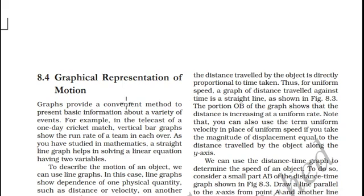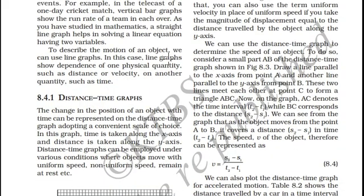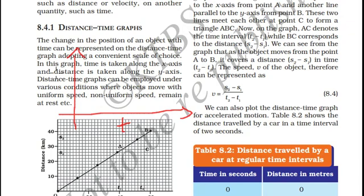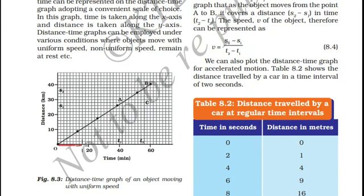Graphical representation of motion: to describe the motion of an object we can also use graphs. In distance-time graphs, we generally plot time on the horizontal axis (x-axis) and other physical quantities on the vertical axis (y-axis). So on the x-axis we write time, and on the y-axis we write distance. Let us denote time on the x-axis and distance on the y-axis.